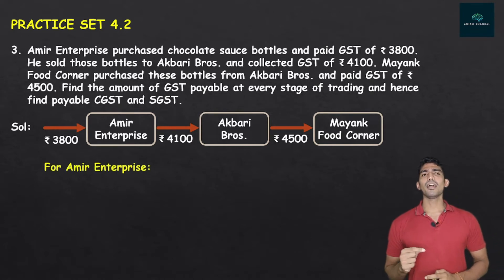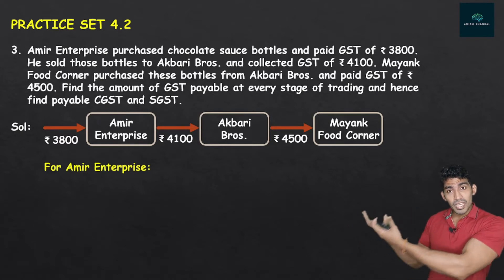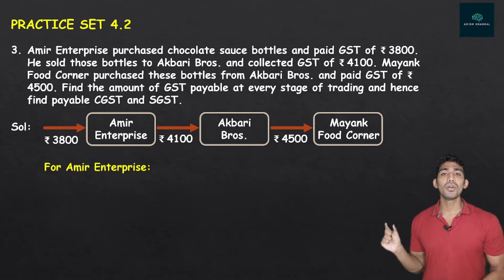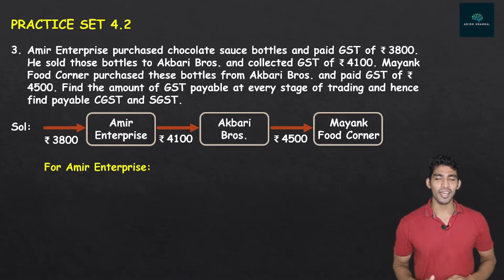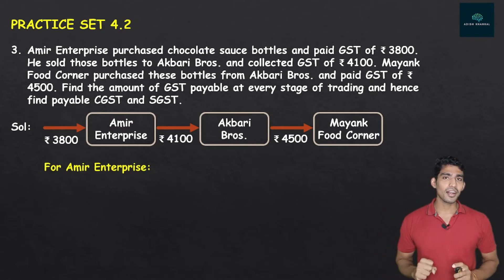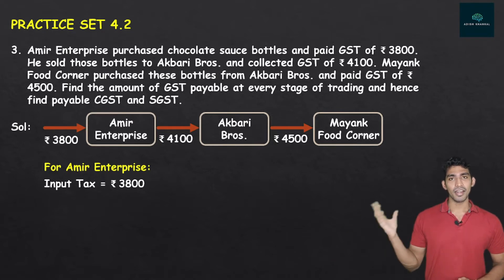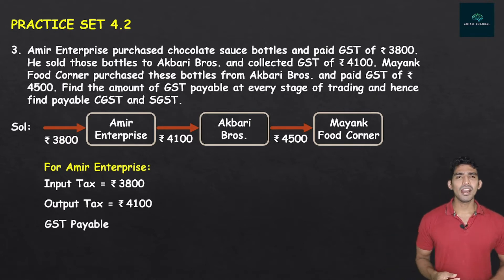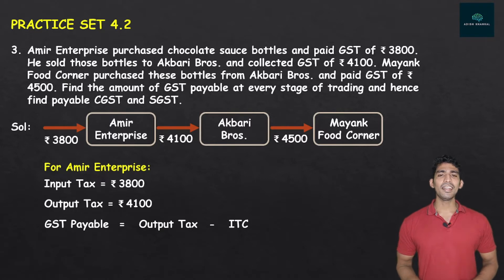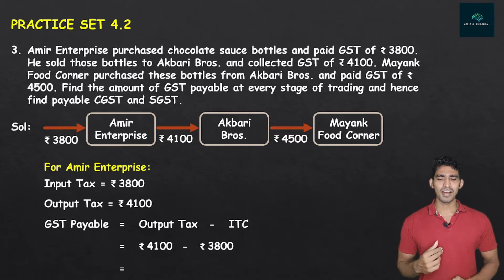For Amir Enterprise: when material comes in, the tax is called input tax; when material goes out, that tax is called output tax. From the flow chart, the input tax is Rs. 3,800 and the output tax is Rs. 4,100. GST Payable = output tax minus ITC = 4,100 minus 3,800 = Rs. 300.